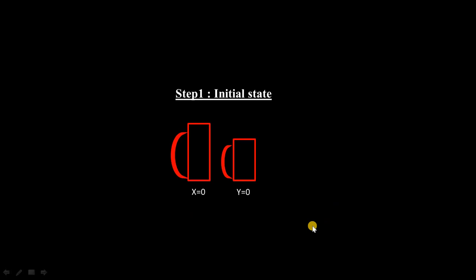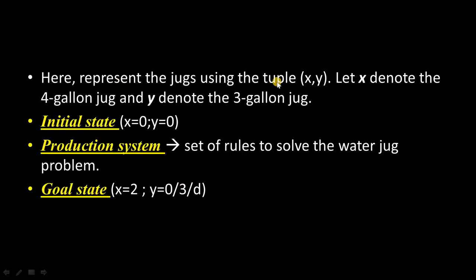This is the initial stage. This is a 4-gallon jug and this is a 3-gallon jug. I am representing the 4-gallon jug with variable x and the 3-gallon jug with variable y. The initial value of x and y is 0. We represent the jugs using a tuple (x, y). The initial state is x = 0 and y = 0, because both jugs are empty — this is given in the problem itself.